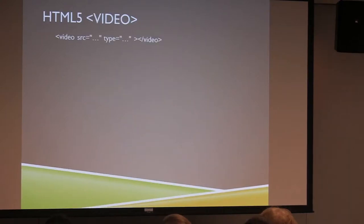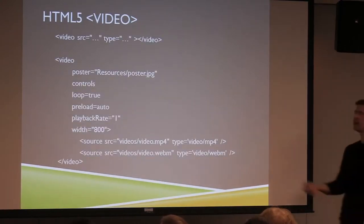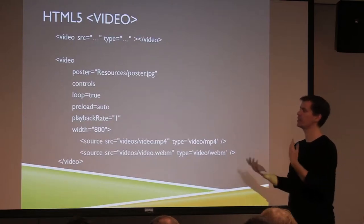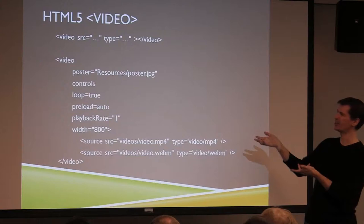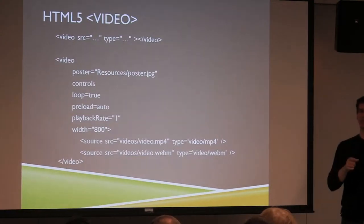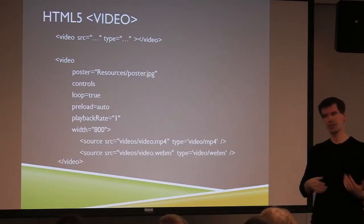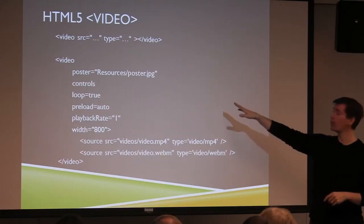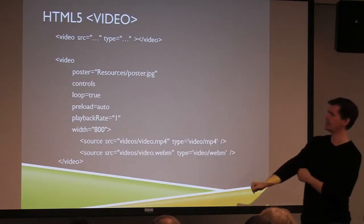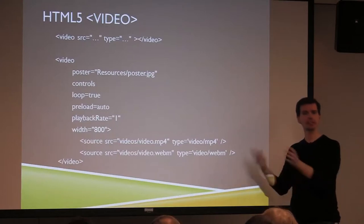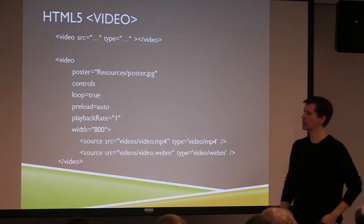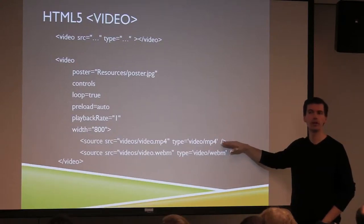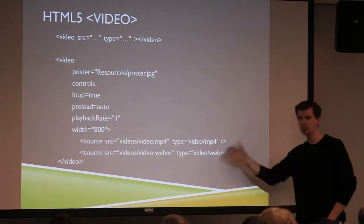The same thing is true with video. The syntax is much the same — video tag, various options. Poster is a chance to show a picture that will be displayed before the video has been downloaded and started to be played, to entice the user into pressing play. Playback rates: 1 is normal, 1.5 gets the chipmunk effect. And then we have the same story with sources — there's no one universal format yet, so multiple encoding is needed. JavaScript also has APIs to play audio or video if you want code-based control of playback.